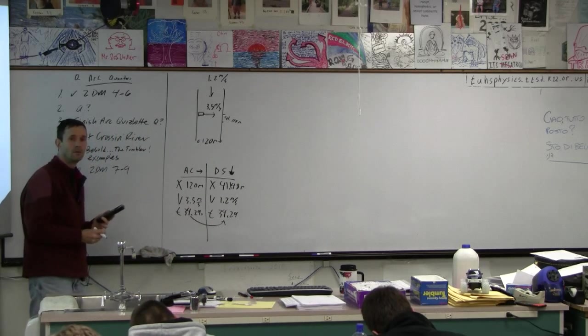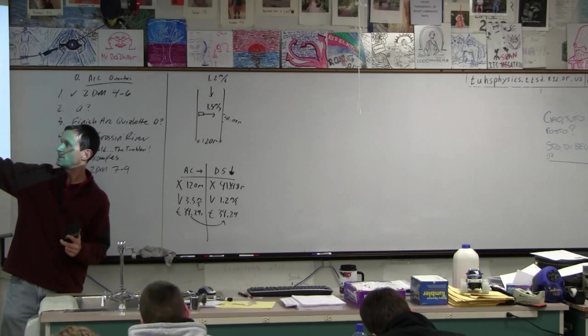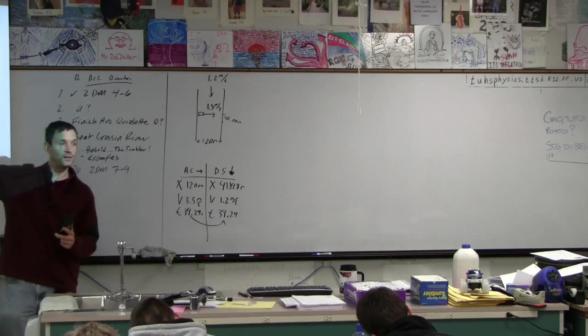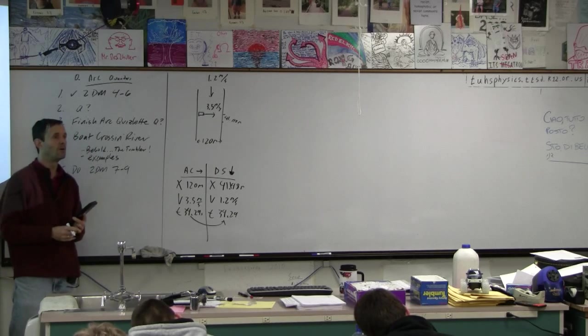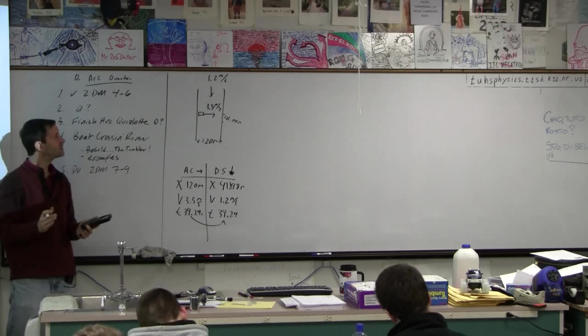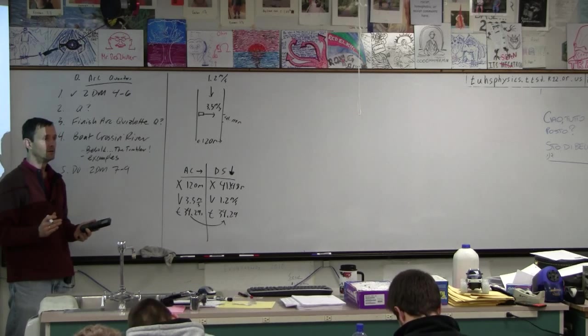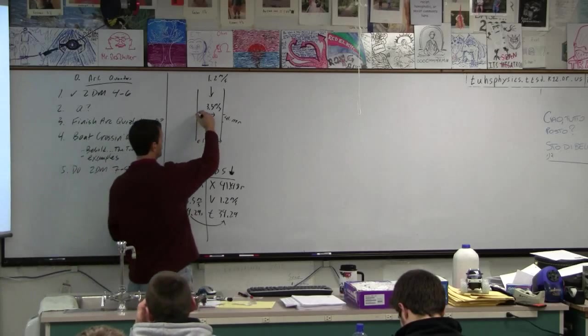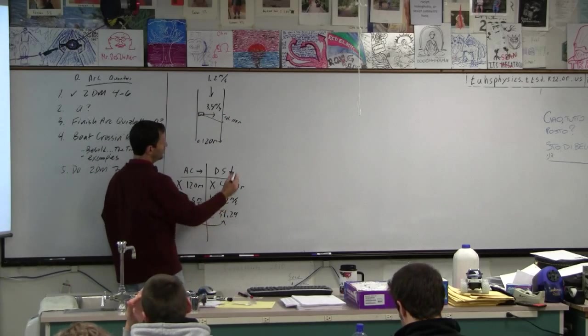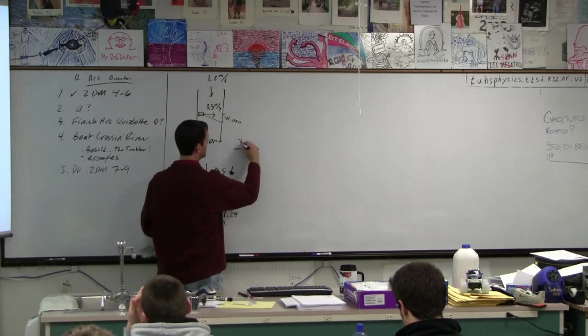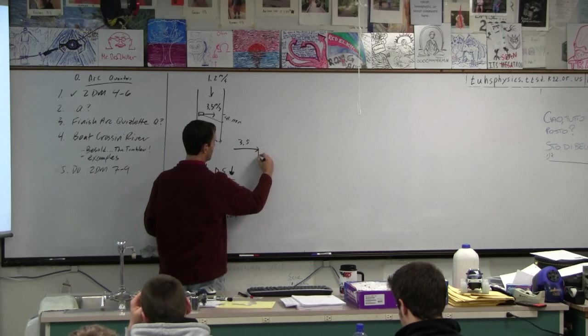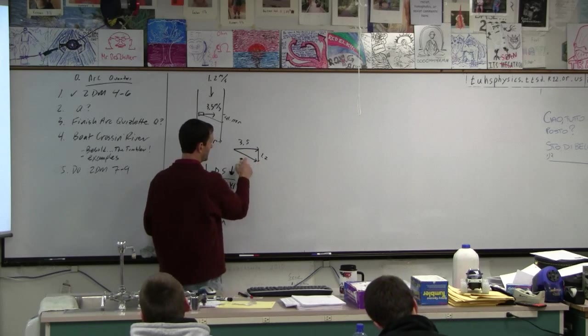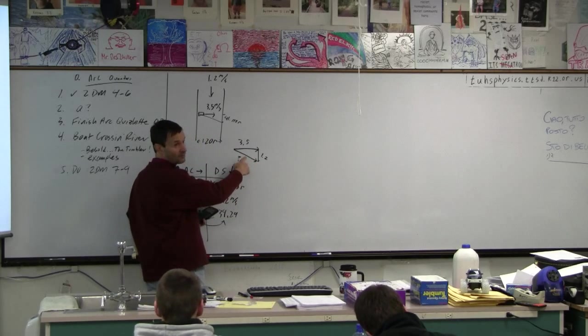Yeah? And then it says, one of the questions up here, it says, time to cross, we figured that out. Where it lands, we figured that out. Then it says, velocity is seen from above. So as it crosses the river, what will we see it do? 3.5, it's going to be going at an angle. It's going to go like this. And it's going to be going 3.5 across and 1.2 down. So if it says, what's the speed with respect to the shore? That's this guy here. How would we find that speed?